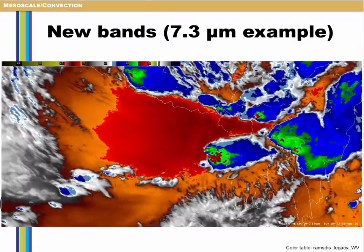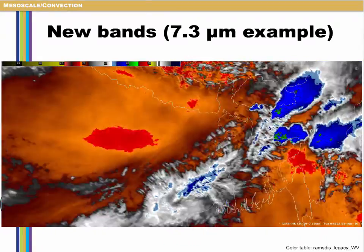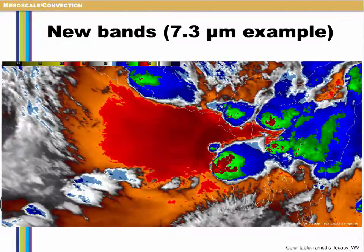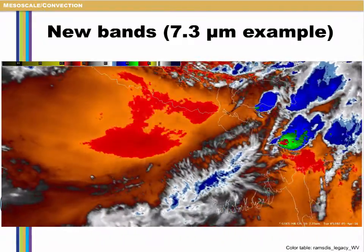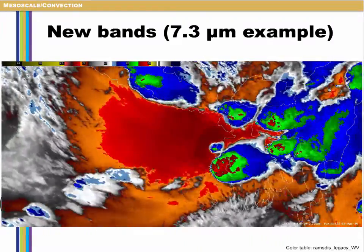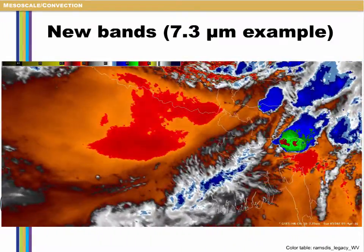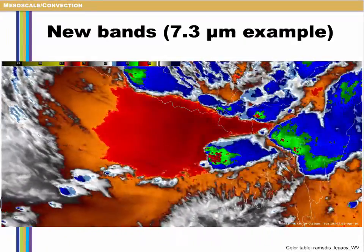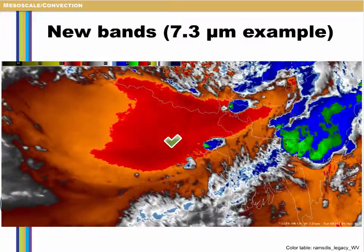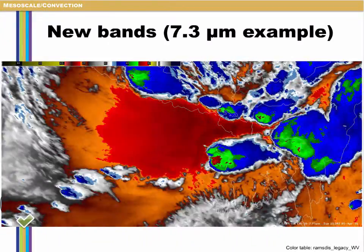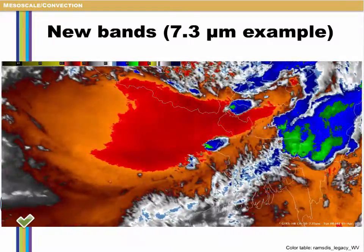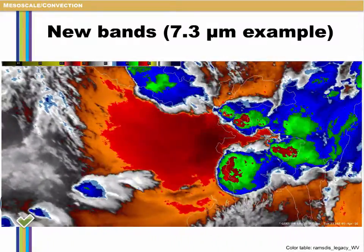One of the new bands on GOES-R will be at 7.3 microns. This band will not only show features you are accustomed to seeing with a current GOES water vapor band, but also lower-level features as well, since the weighting function profile is lower in altitude. In this Himawari example over Bangladesh, this region of warmer brightness temperatures over northeast India, advecting eastwards, represents a combination of an elevated mixed layer as well as diurnal heating of a relatively hot air mass west of a dry line.